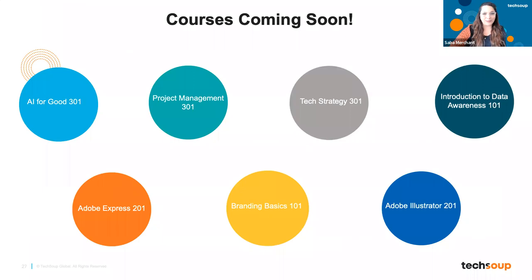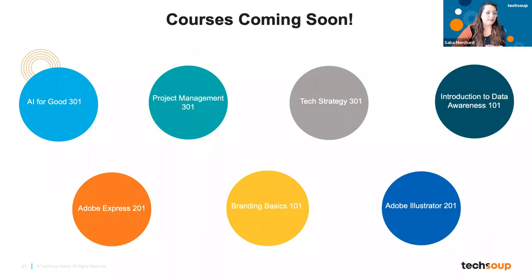We have many more courses coming up besides these three. Some upcoming courses include AI for Good, Project Management, and Tech Strategy — all six-week blended courses happening later this year. We also have courses on two more Adobe products — Adobe Express and Illustrator — as well as an Introduction to Data Awareness 100-level course, and a Branding Basics course.